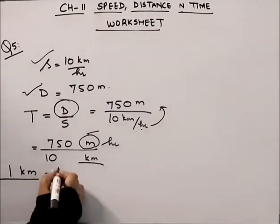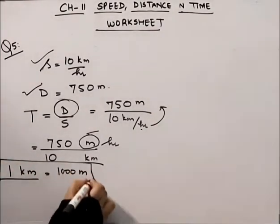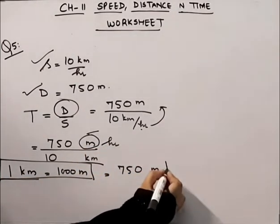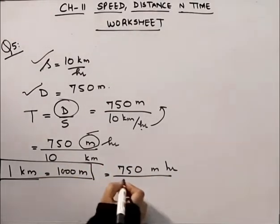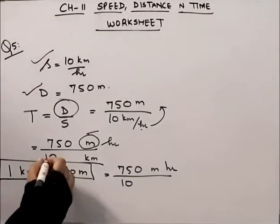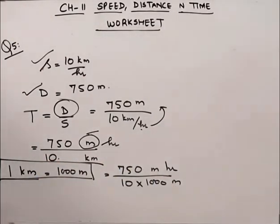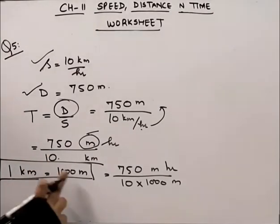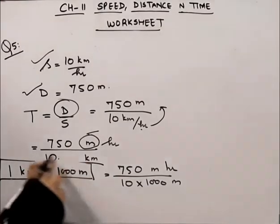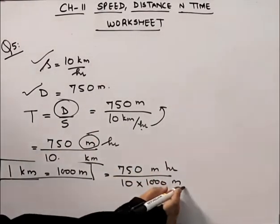The relationship is 1 km is equal to 1000 meters. We will apply this. So 10 km will be equal to 10 into 1000 meters. We have 10 kilometers, so we multiply by 1000 to get the answer in meters.